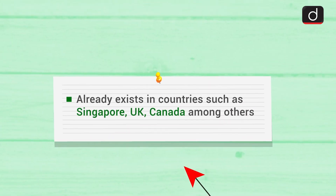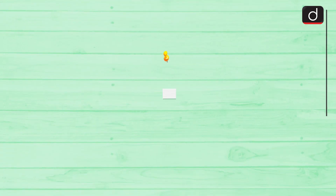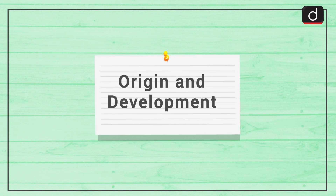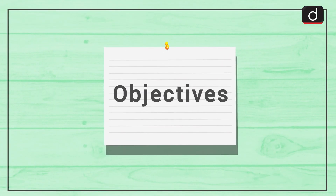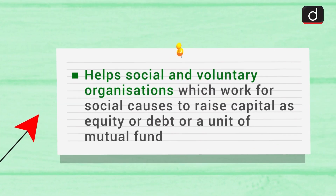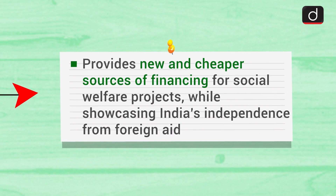The Social Stock Exchange already exists in countries such as Singapore, UK, and Canada, among others. Looking at its origin and development, the exchange was mooted in the Union Budget of 2019-20 with the objective to help social and voluntary organizations working for social causes to raise capital as equity, debt, or a unit of mutual fund. It provides new and cheaper sources of financing for social welfare projects while showcasing India's independence from foreign aid.